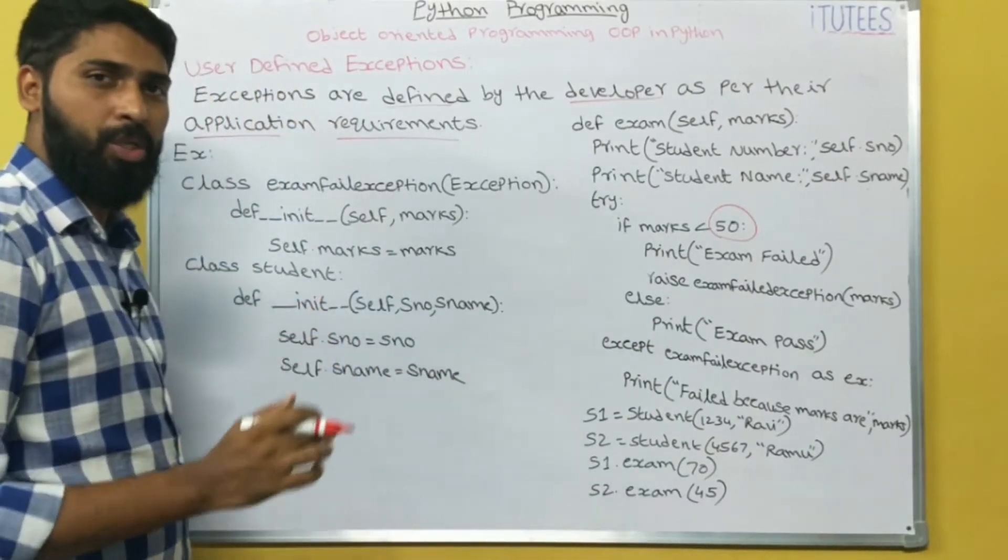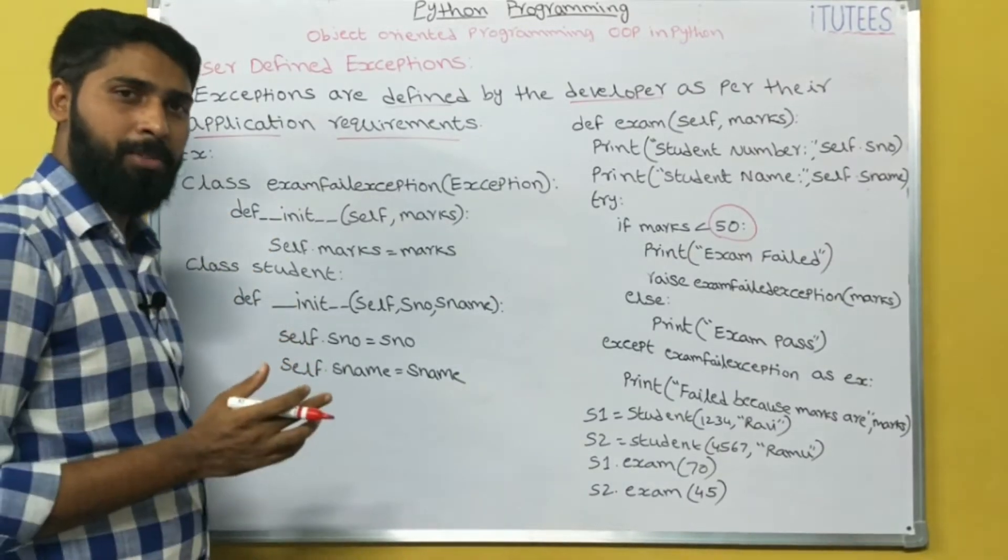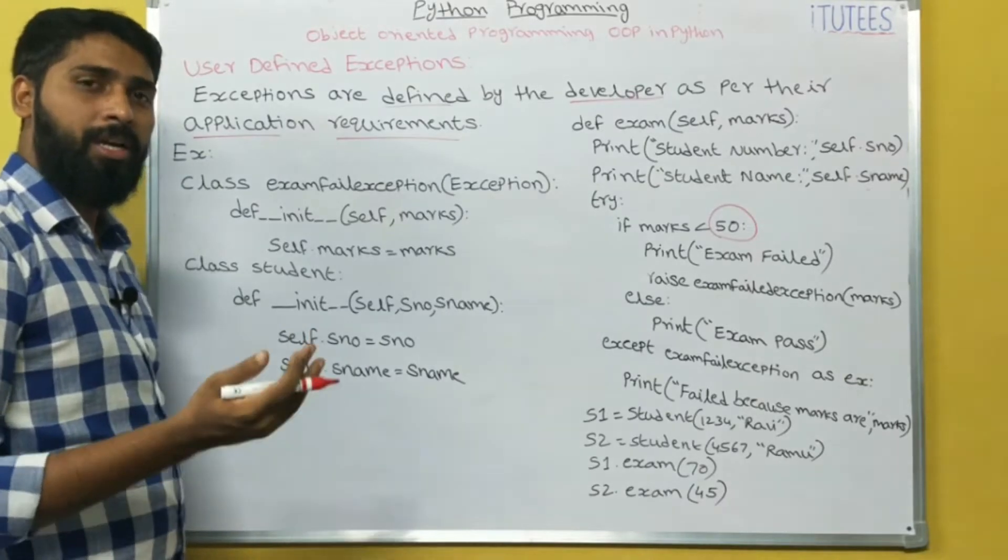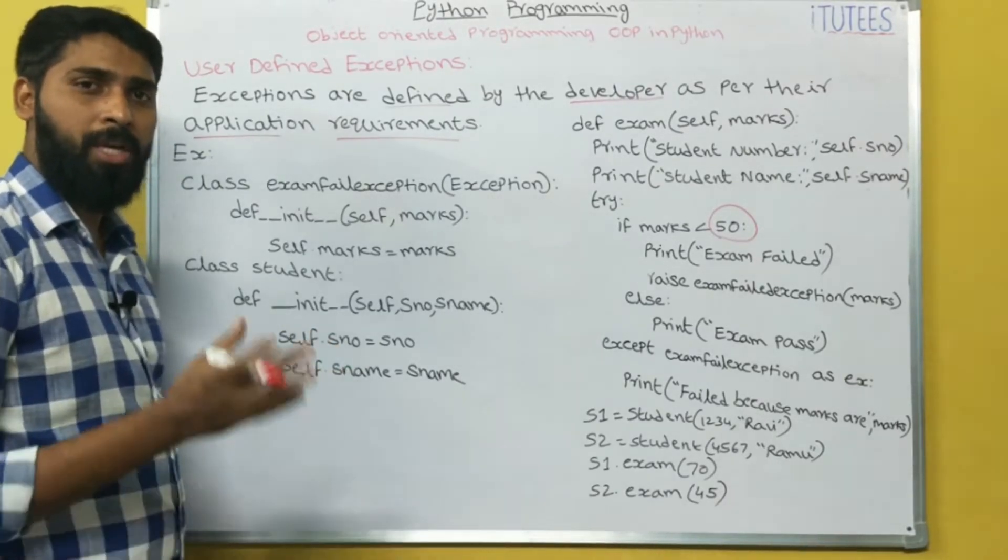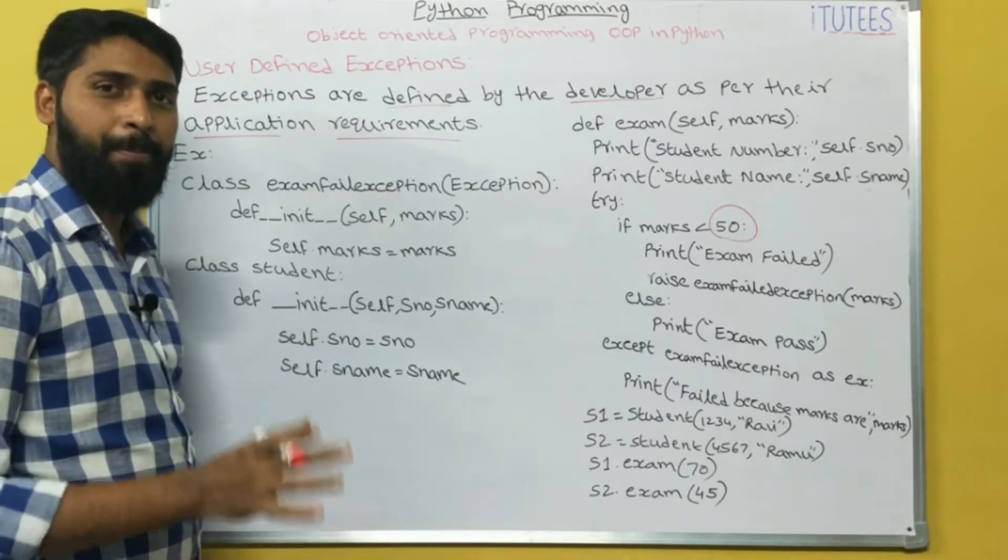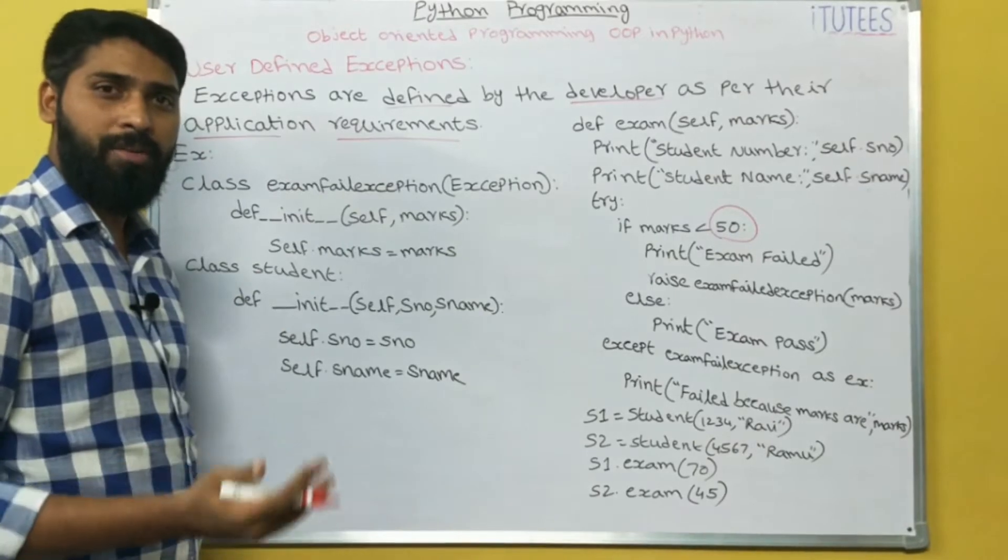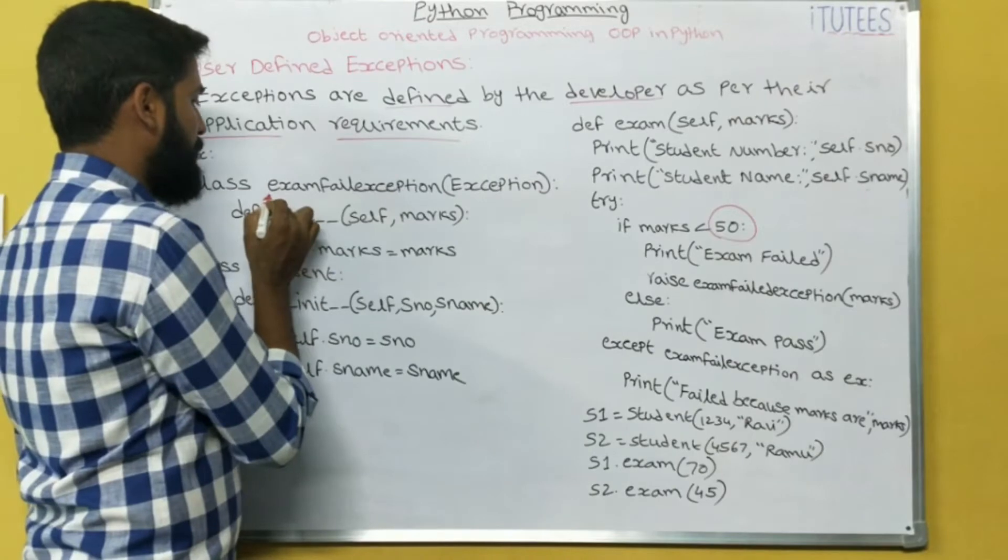Now we can see how we can define user defined exception. What is the exception? Exception is a class. The number divisional exception, floating point exception - all these exceptions are predefined classes. But here we are going to discuss about user defined exception. So we can define a class for exception.